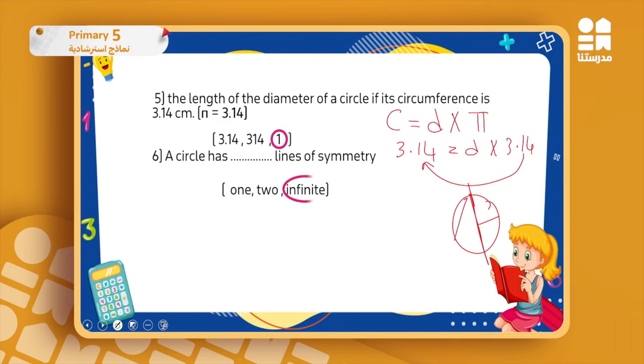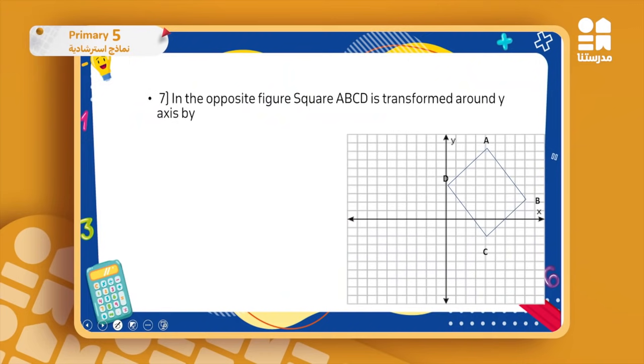Okay, now the last question here. In the opposite figure, square ABCD is transformed around the y-axis—this is my y-axis—by what? Reflection, translation, or rotation? Where's the other square?